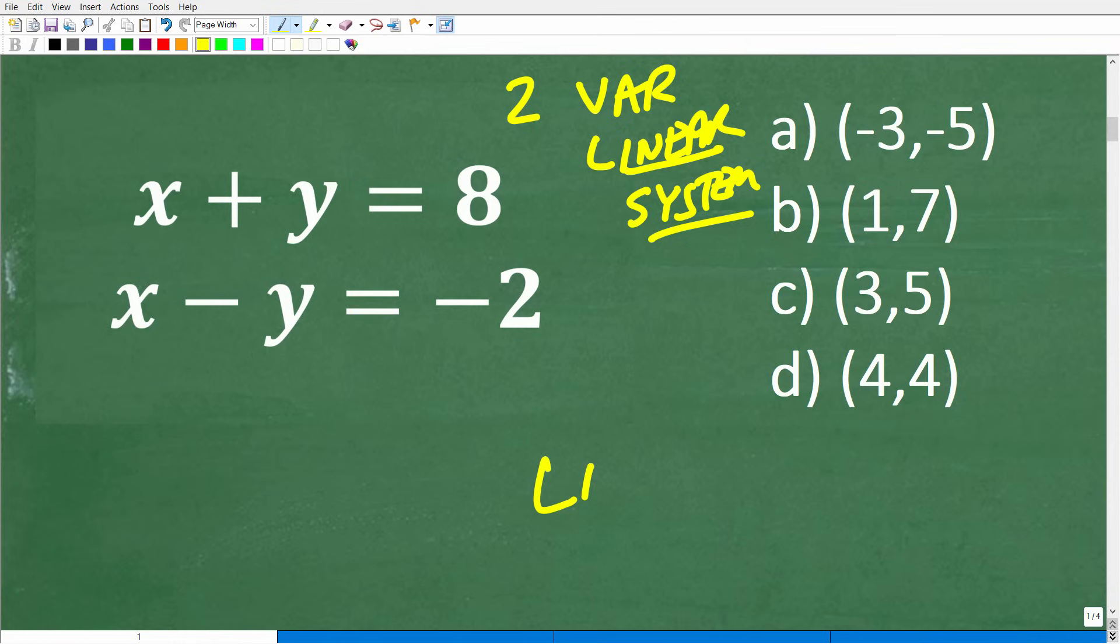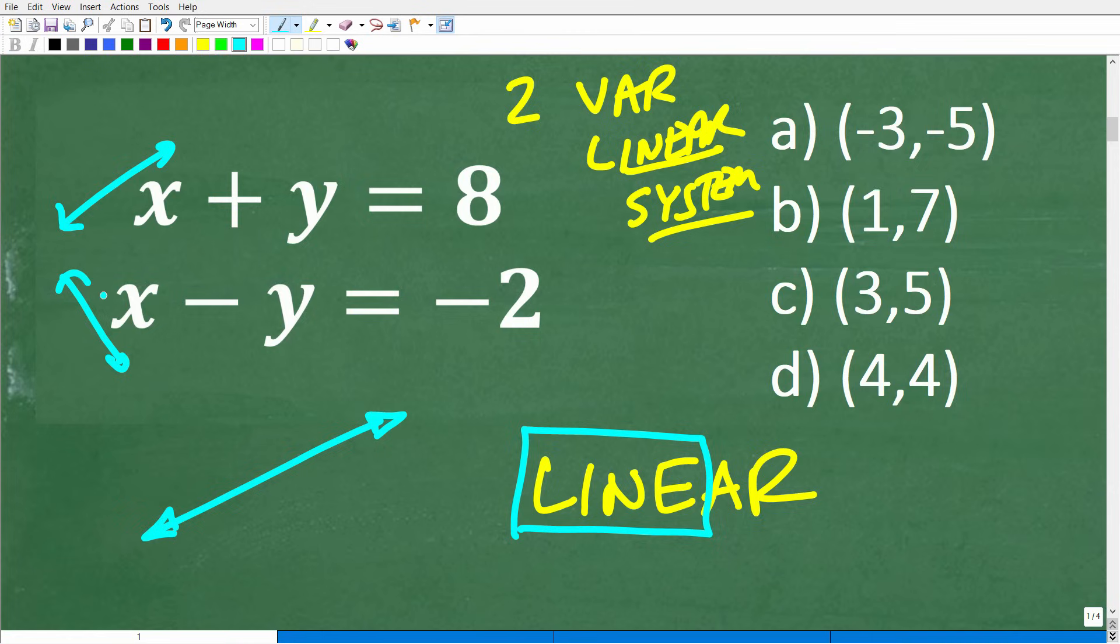Now, linear, what's the root word of linear? Okay, so this is a big word in algebra. Well, the root word is line. Okay, so these equations here are actual equations of lines. Okay, in other words, a line that you could graph on the xy plane. So this is some line right here, and this is like another line.